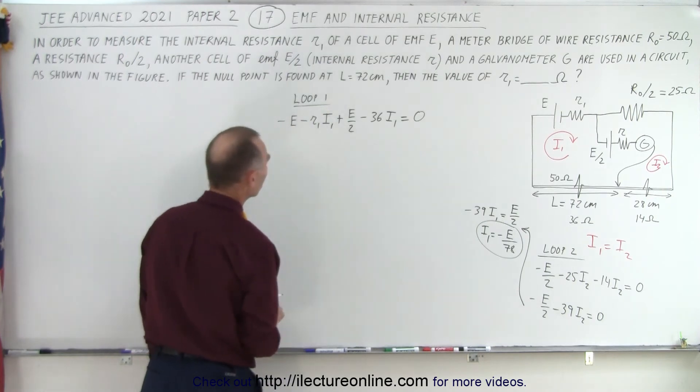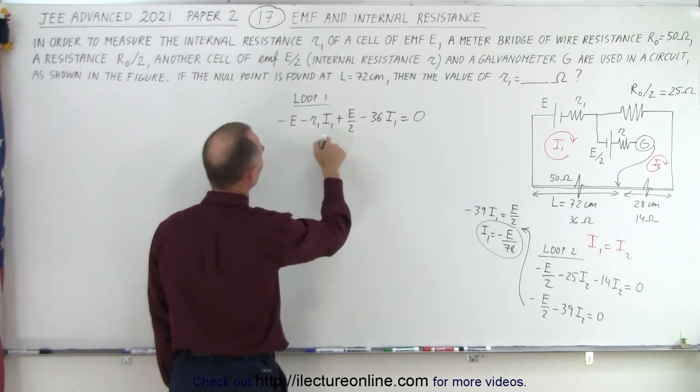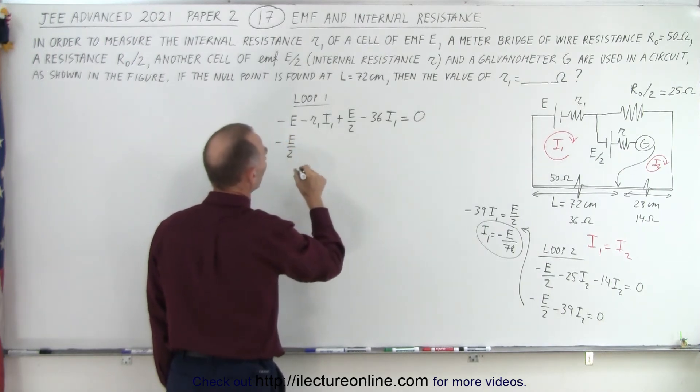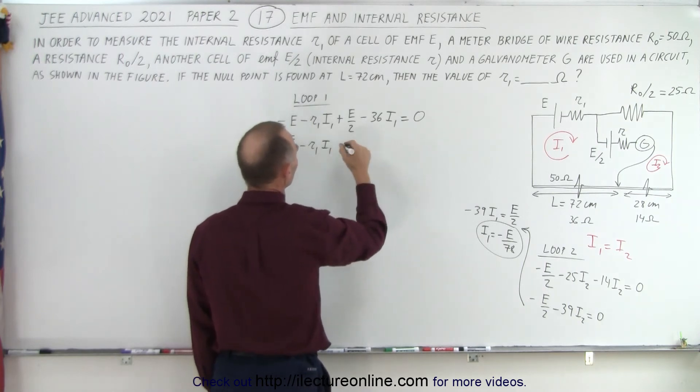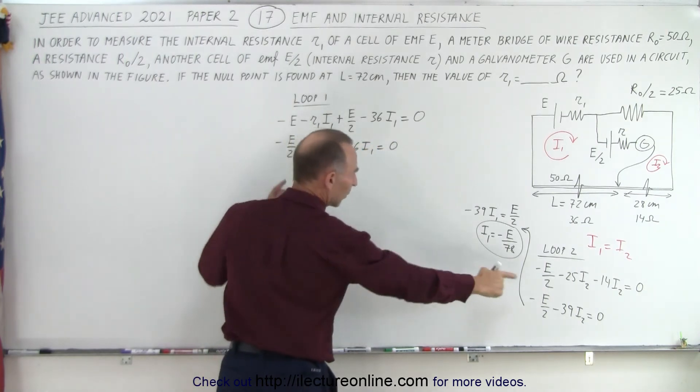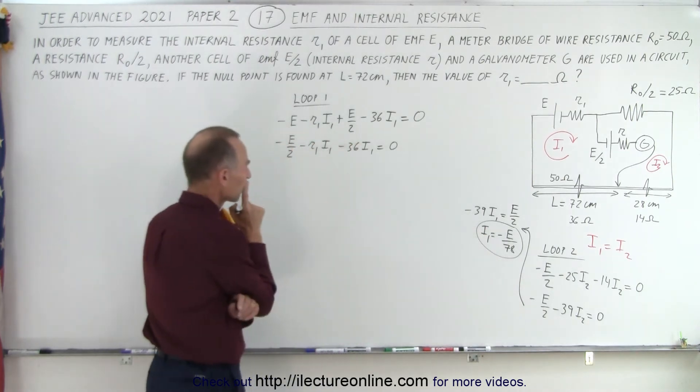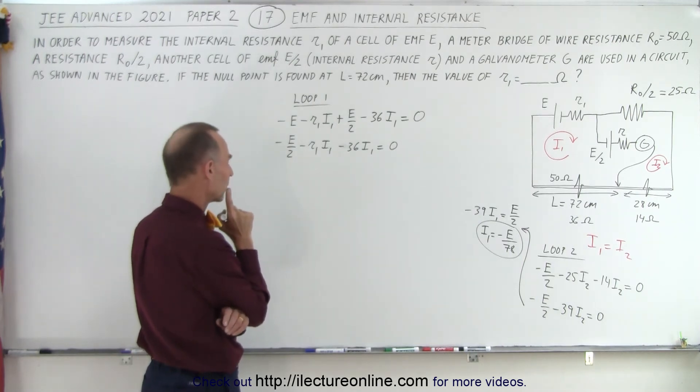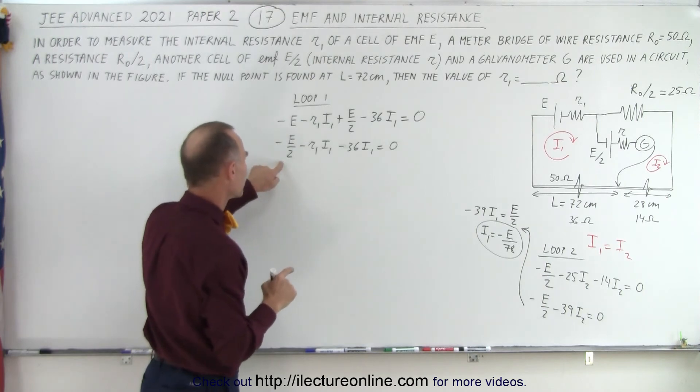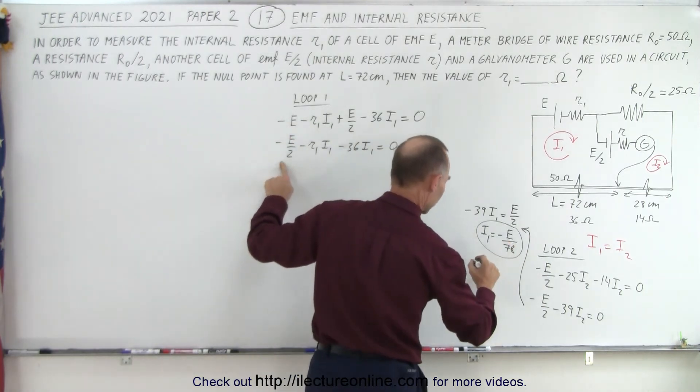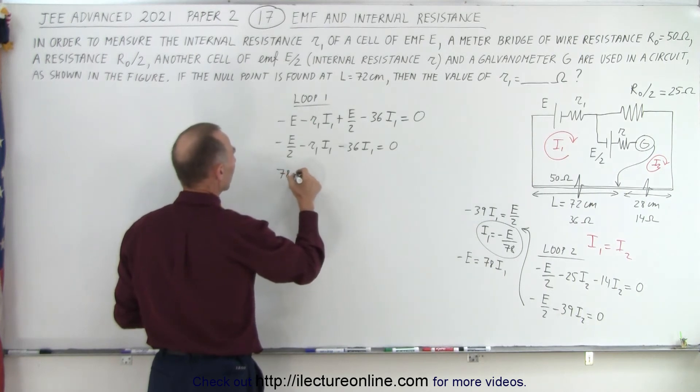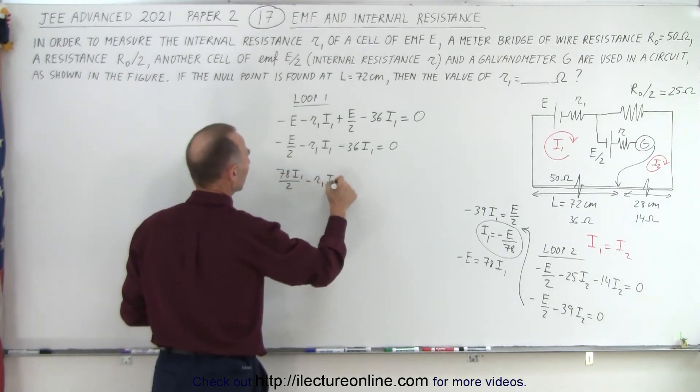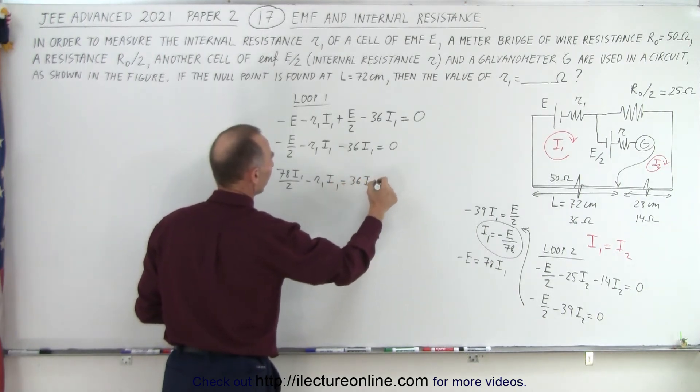Now we come back over here and finish this off. We have minus E plus E/2, that gives me minus E/2, then we have minus R1I1, minus 36I1 equals zero. So now we have to make that replacement. I can say that minus E equals 78I1. Let me make that replacement. I can write minus E as 78I1, so I have 78I1 divided by 2 minus R1I1 minus 36I1 equals zero.